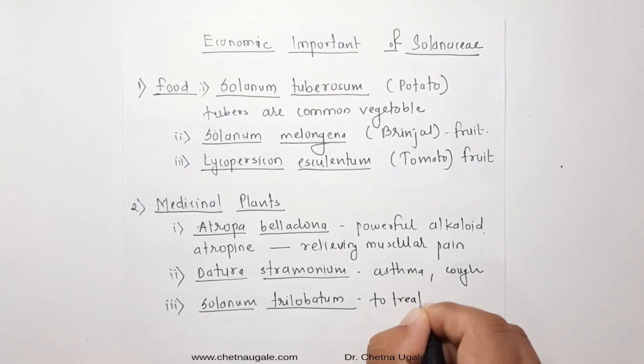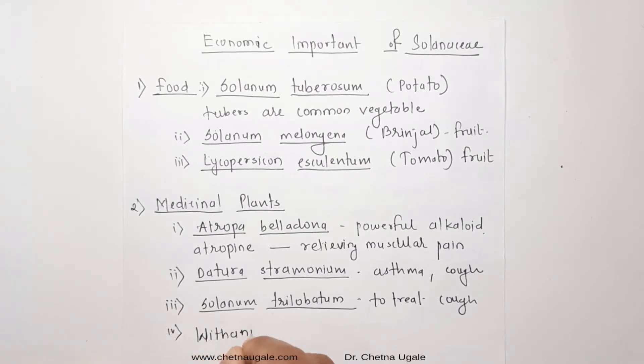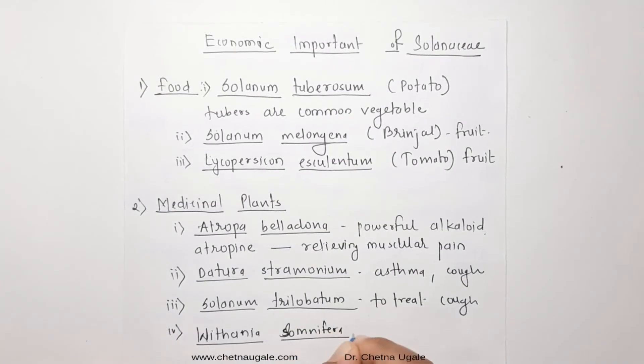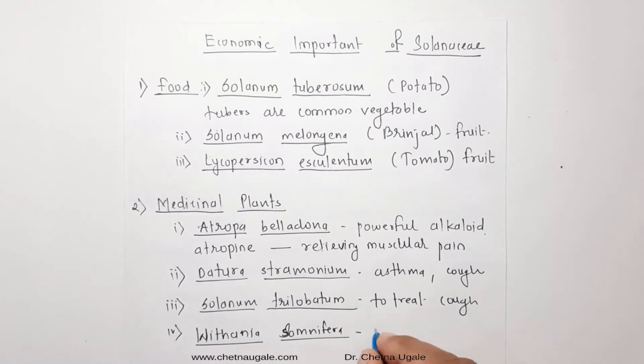The next medicinal plant is Withania somnifera, which is commonly called as Ashwagandha. As the name indicates, it is largely used for the preparation of tonic. Its roots and leaves are used for the treatment of nervous disorders.